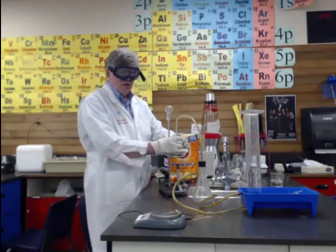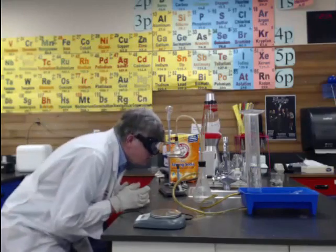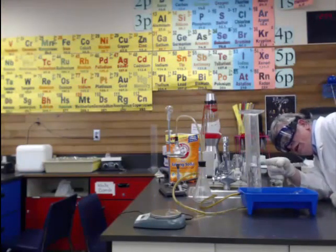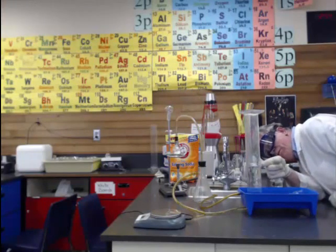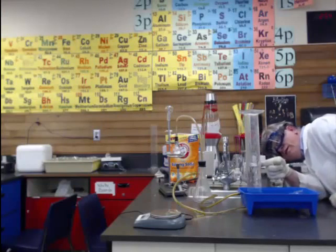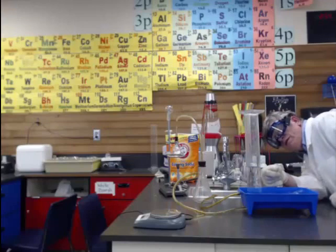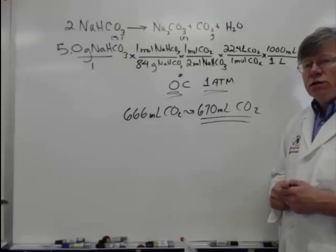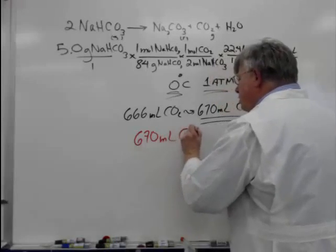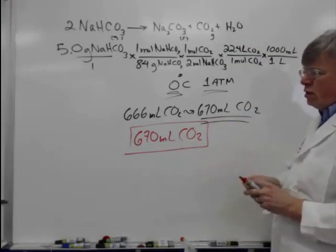Now I'm going to read the graduated cylinder and see how much gas has been generated. Coming around the other side, I can see it's at 650, 660, almost 670 milliliters — 700 is right here — it's about 670 milliliters. As you can see, the prediction came out very close: about 670 milliliters of CO₂ gas was actually given off in the lab. If it were exactly that, this would be a 100% yield. Pretty good!